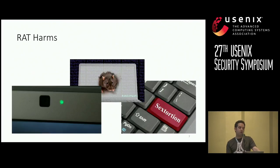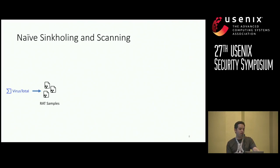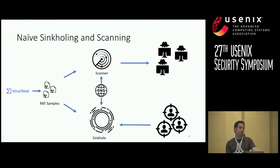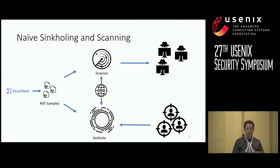RATs can and do cause lasting harm to people's lives. Because of this, we are motivated to take this a step further and study the RAT ecosystem — specifically, to understand the relationship between RAT victims and attackers and who they are. In order to study the RAT ecosystem, there is a naive approach of sinkholing and scanning that seems to be standard for industry and research. In this approach, RAT samples are obtained, decoded, and then continuously scanned by a targeted RAT scanner, or RAT domains are sinkholed if not already taken down. In this work, we show some issues with this naive approach and how to overcome them.